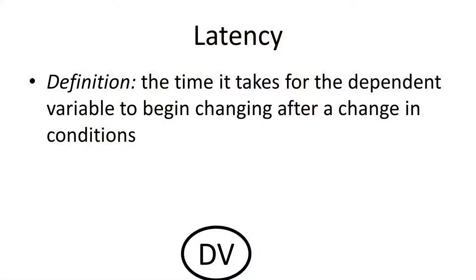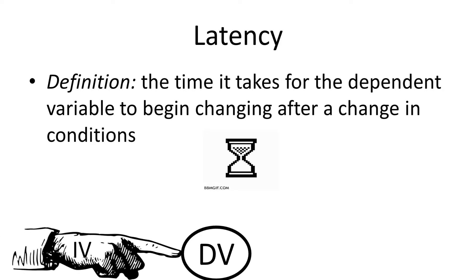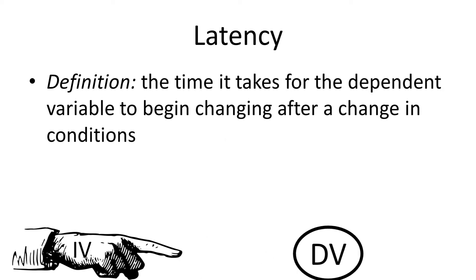Another important term is latency, which refers to the time it takes for the dependent variable to begin changing after you make some kind of change in the conditions. We manipulate an independent variable, and then the dependent variable moves — but cause and effect don't happen one right after the other. There's some delay, and when it comes to single-subject research that delay can be a big problem, making it very hard to establish a cause-effect link between variables.